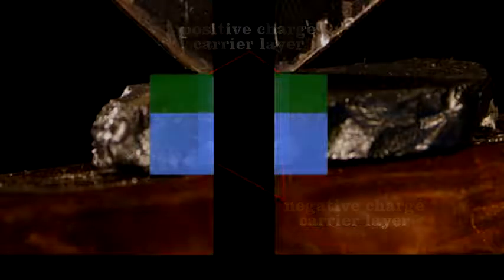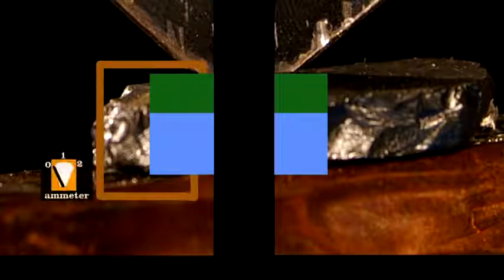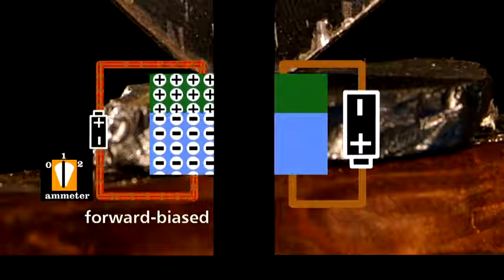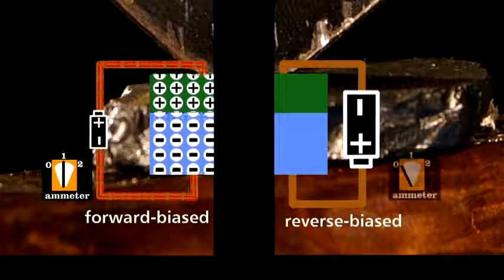Now, even though that top layer is very thin, I've exaggerated it here to make the operation of the transistor clear. On the left, we attach a small battery with its positive terminal connected to the top layer. This allows current to flow. On the right, we use a larger battery, but with its ends reversed. This creates a device where current doesn't flow.